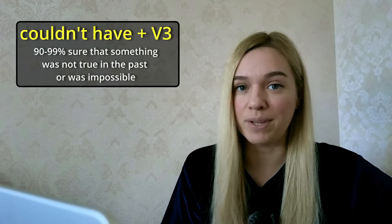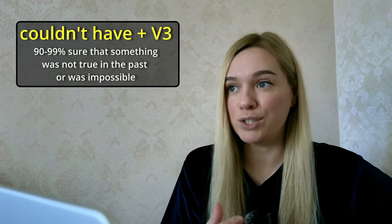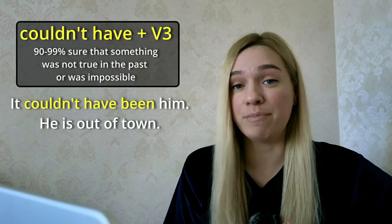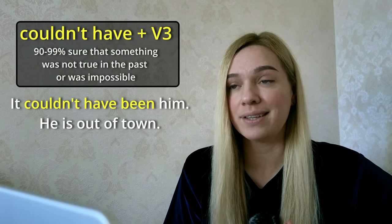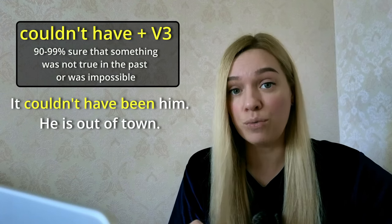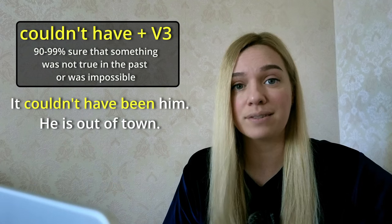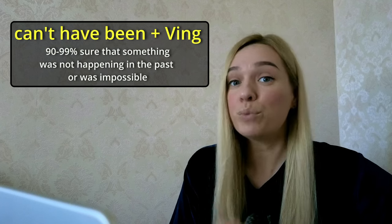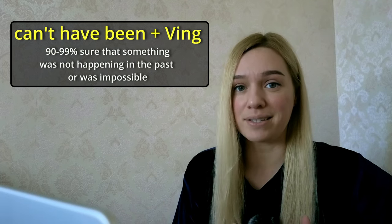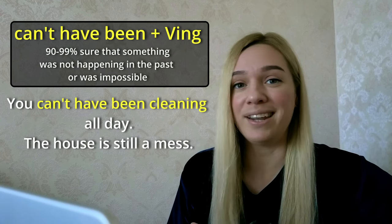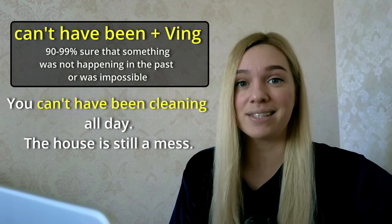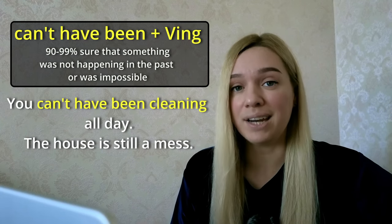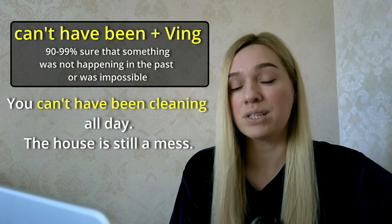We can also use 'couldn't have' plus past participle to talk about things you believe weren't true in the past. For example: 'It couldn't have been him. He's out of town' — you believe it wasn't him because you know he left town. We use 'can't have been' plus verb-ing when we believe something was not happening in the past. For example: 'You can't have been cleaning all day. The house is still a mess' — you believe this person wasn't cleaning because the house still looks dirty.